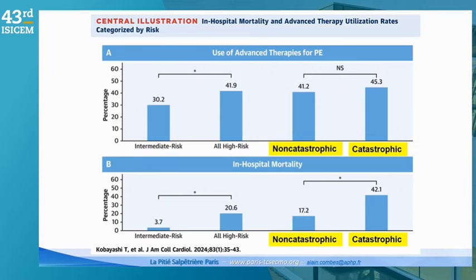Outcome data from this large series: on the top panel, the use of advanced therapies including devices showed no difference in the percentage of patients with high-risk versus catastrophic PE having devices deployed. However, looking at mortality rate, it was obviously much higher for catastrophic PE — 42% versus 17%. This clearly has a major impact on the outcome of those patients.